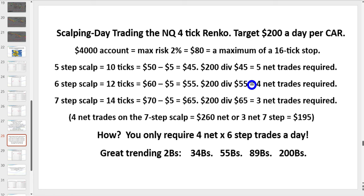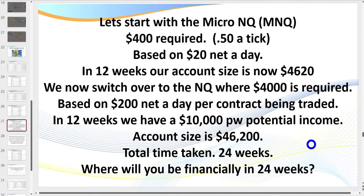When you scalp, you're usually using fixed targets rather than trailing. As a scalper, providing you've got a good 75% win-loss ratio, you're going to do very well. A micro contract is 10% of the value of the full contract. We've got micro contracts for the ES, the Dow, the Russell, and even oil — so you can trade your favorite market with only 10% of the capital requirement.